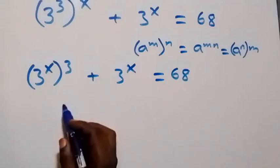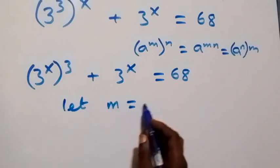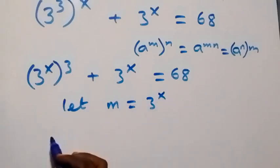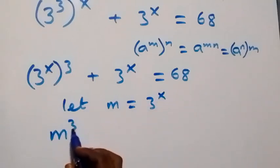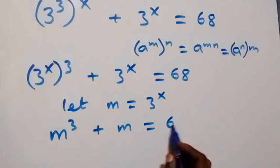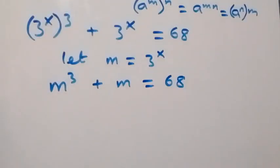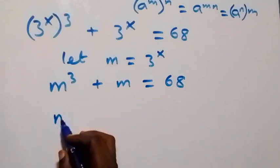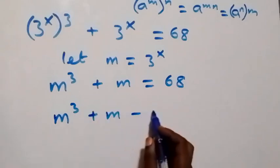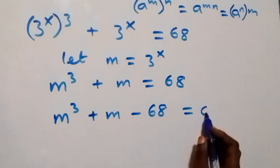Let the letter m represent 3 raised to power x. Then this equation becomes m cubed plus m equals 68. Taking 68 to this side, we have m cubed plus m minus 68 equals 0.